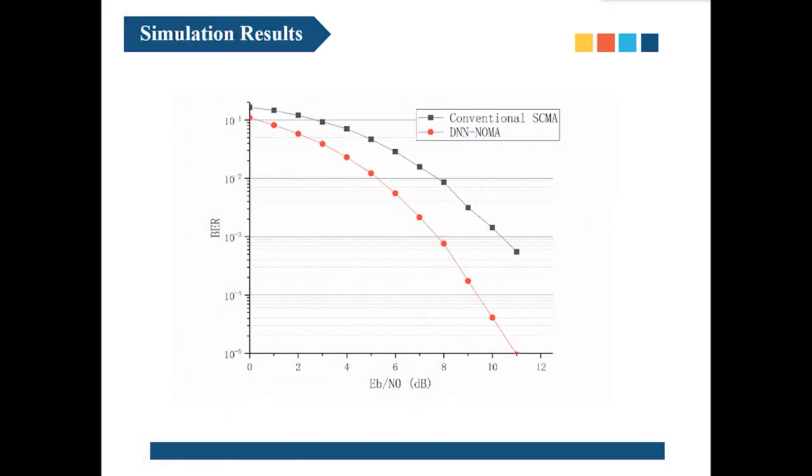The result of proposed DNN NOMA and conventional SCMA are shown in this figure. The number of users and number of orthogonal resources are six and four in the simulation respectively. According to the figure, the proposed DNN NOMA scheme significantly outperforms the conventional SCMA. The main reasons for the better performance of DNN NOMA are summarized as follows. First, unlike SCMA, in DNN NOMA scheme, the orthogonal resources used by each user is not fixed. They are automatically determined in the process of training.